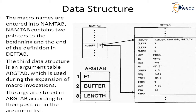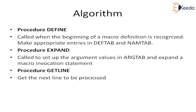These three argument entries are stored in the argument table. The procedure REFINES handles the beginning of a macro — meaning when the procedure is called at the beginning of that macro, it records the entry in the definition table and name table. The procedure EXPAND sets up the argument values in the argument table and expands the macro invocation. The procedure GETLINE is used for getting the next line to reprocess.